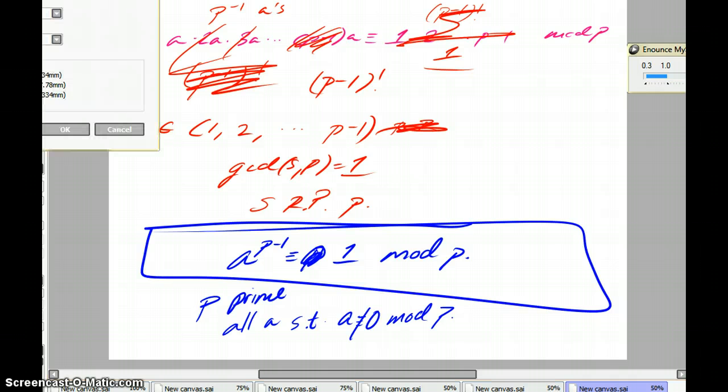Now, let's cover some important, commonly occurring types of problems in contest math. One example is a problem where you're asked to calculate the remainder of something like this when divided by some prime, say, 17.